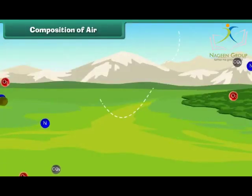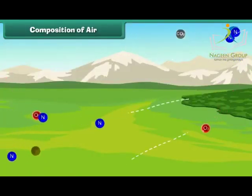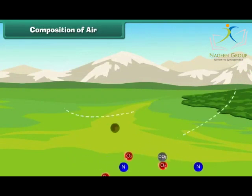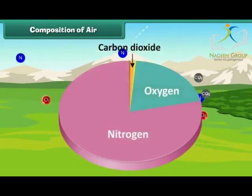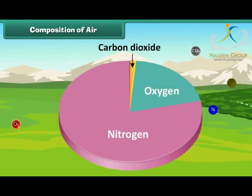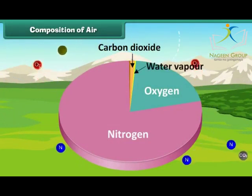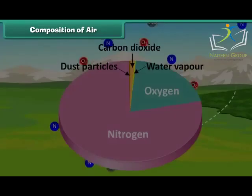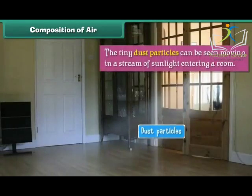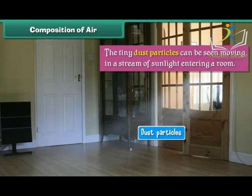Composition of Air. Air is made up of several gases, the most important being nitrogen, oxygen, and carbon dioxide. Air also contains water vapor and dust particles. The tiny dust particles can be seen moving in a stream of sunlight entering a room.